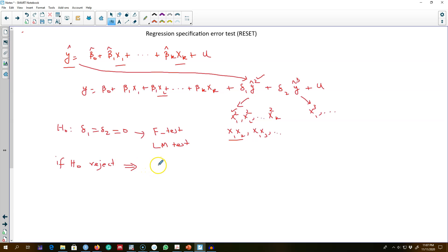You can also include more higher order terms on the right hand side of this equation, but the problem is the interpretation will be very hard. So one problem with the RESET test is it provides little guidance on how to proceed if our H0 is rejected.